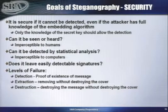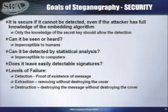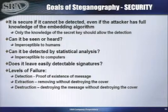Does it leave signatures? And I don't mean statistical signatures, but signatures like altering the quantization table in a JPEG file for a certain purpose — which one of the techniques in the papers does. That's a signature. All you have to do is look and find the JPEG quantization table, look at that bit, and say, 'This byte's a 1 — must be using this steganography program.' There are several levels of failure: detection being the biggest, but extraction and destruction are others as well.